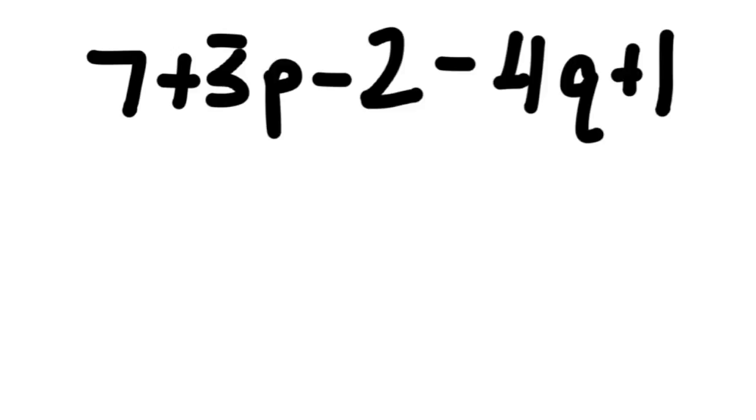Here we have the expression 7 + 3p - 2 - 4q + 1. And again, use the plus signs and minus signs to tell you where the terms are, and there are five terms.